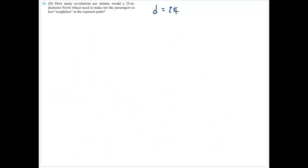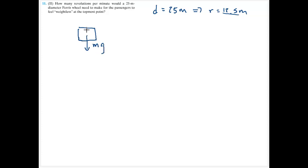Here we have a ferris wheel with a diameter of 25 meters, which means the radius is 12.5 meters — be careful, the book always likes to give diameter. Drawing a free body diagram for the people in the ferris wheel: they have their weight downward and the normal force from the seat upward. We feel weightless when the normal force equals zero.